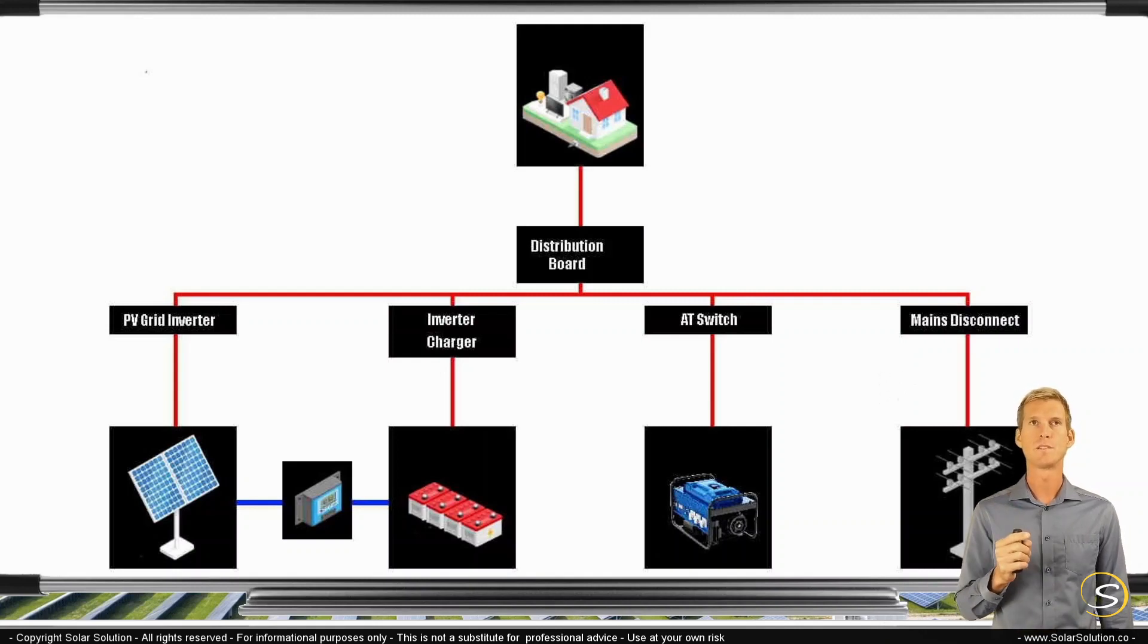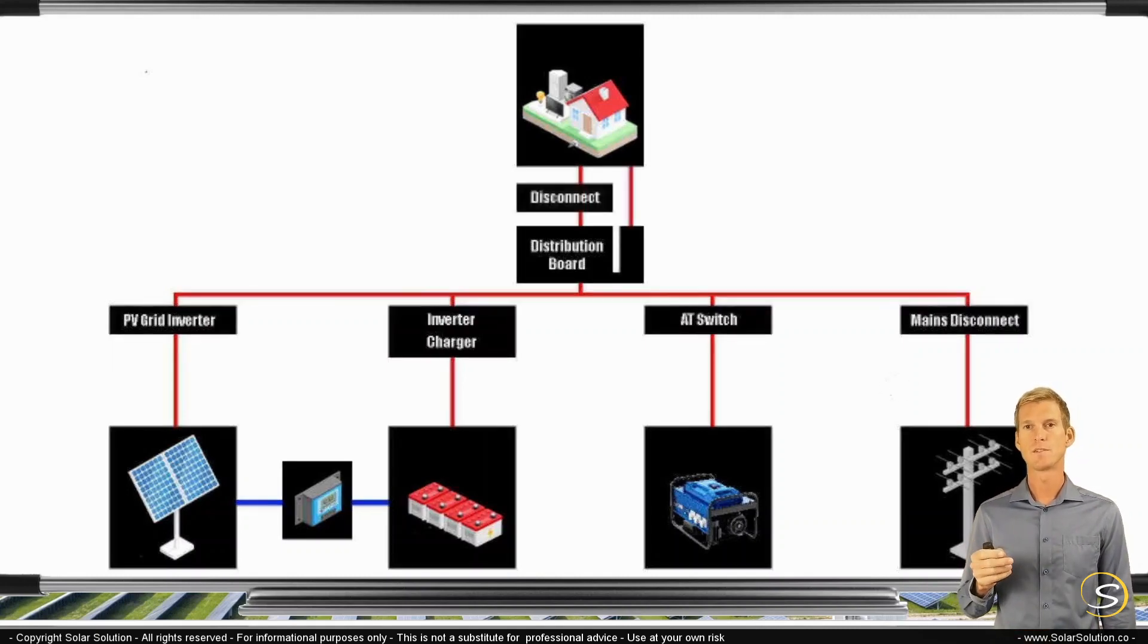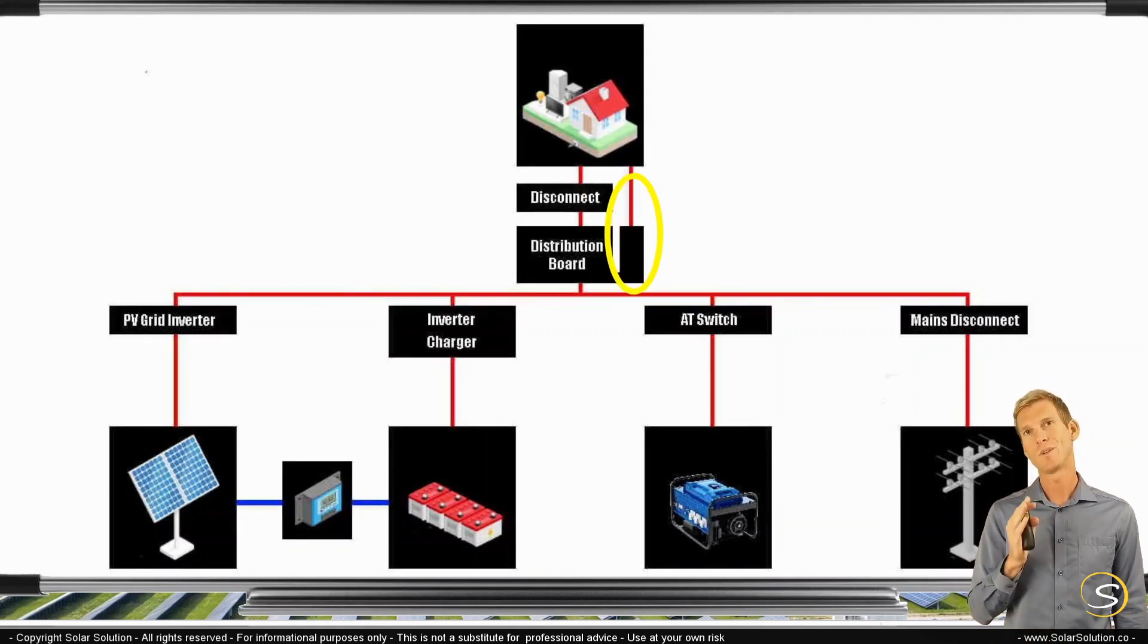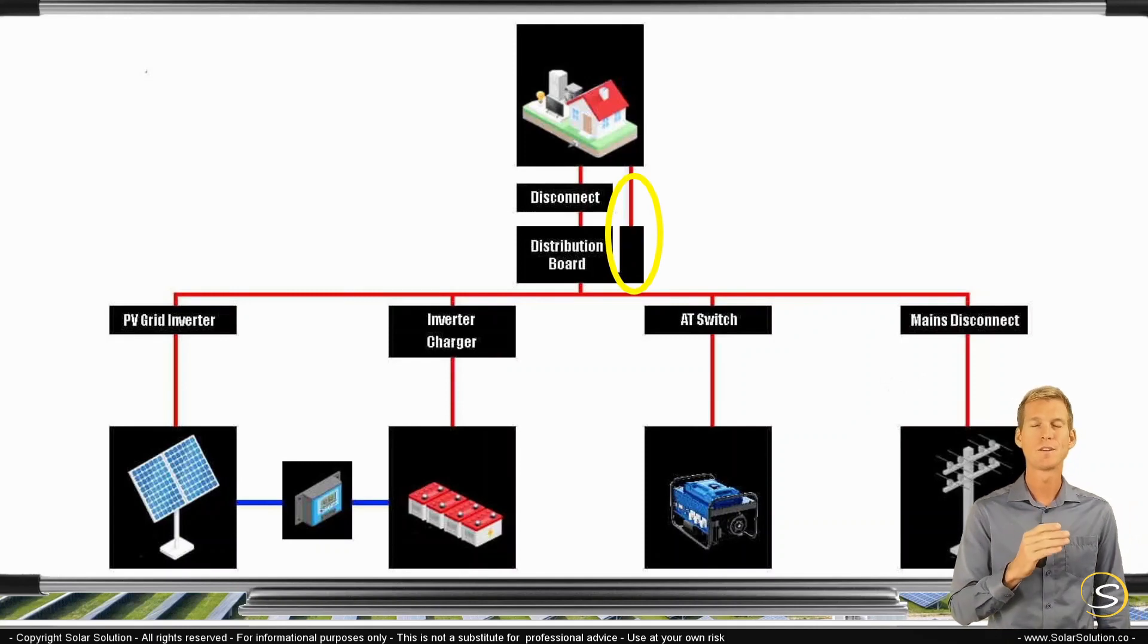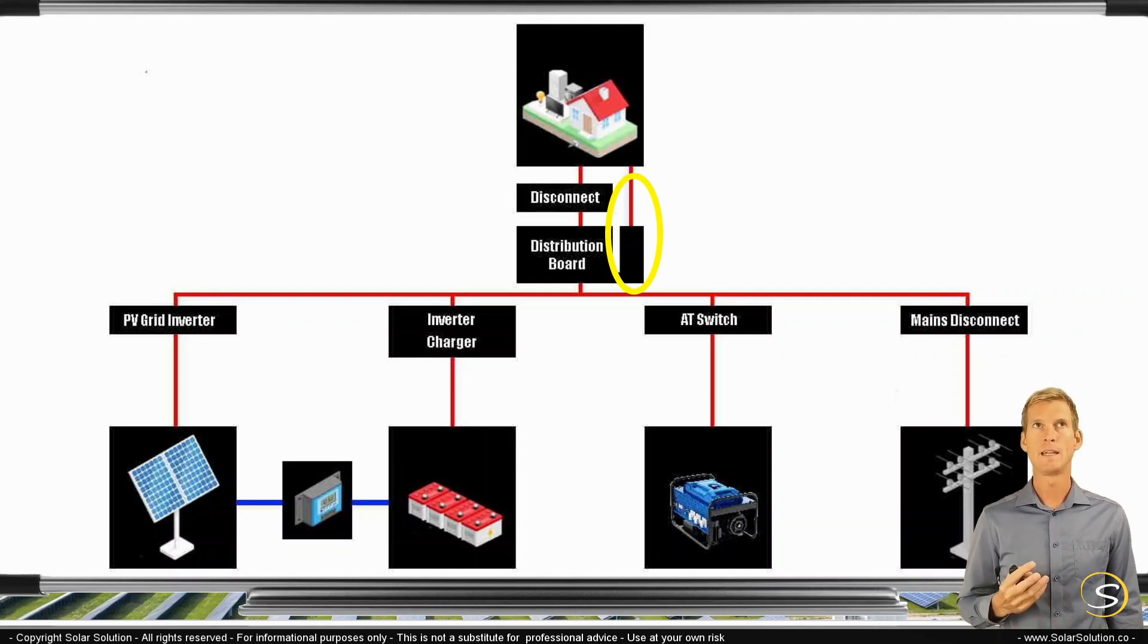Now, you also have the option instead of one conventional distribution board to split your distribution board into two sections, whereby you separate your critical versus your non-critical loads. So, for example, you could say, well, my critical loads are my lights, my Wi-Fi router, my internet modem. I want to have my electric blanket on all the time, whatever happens.